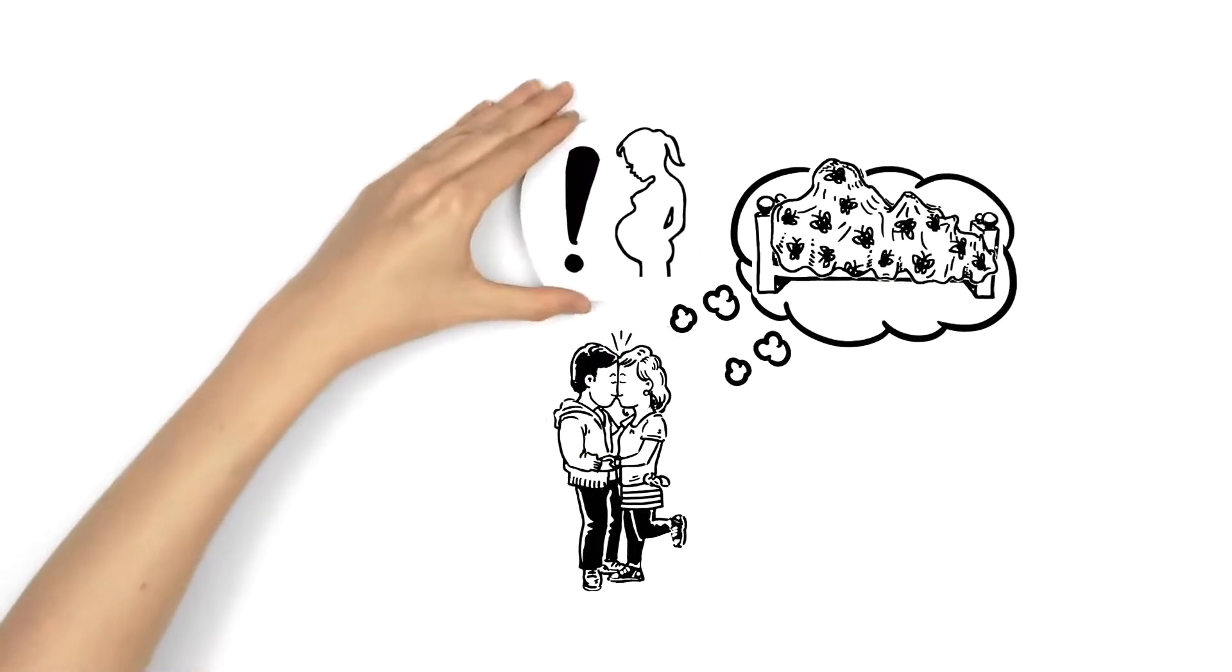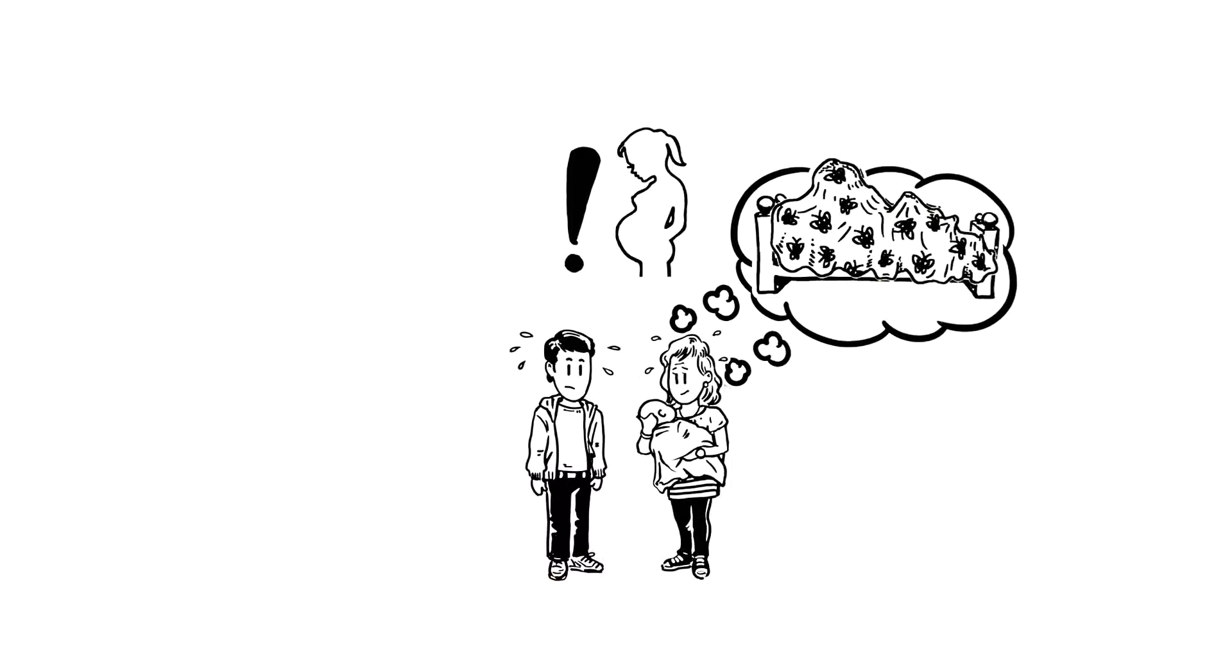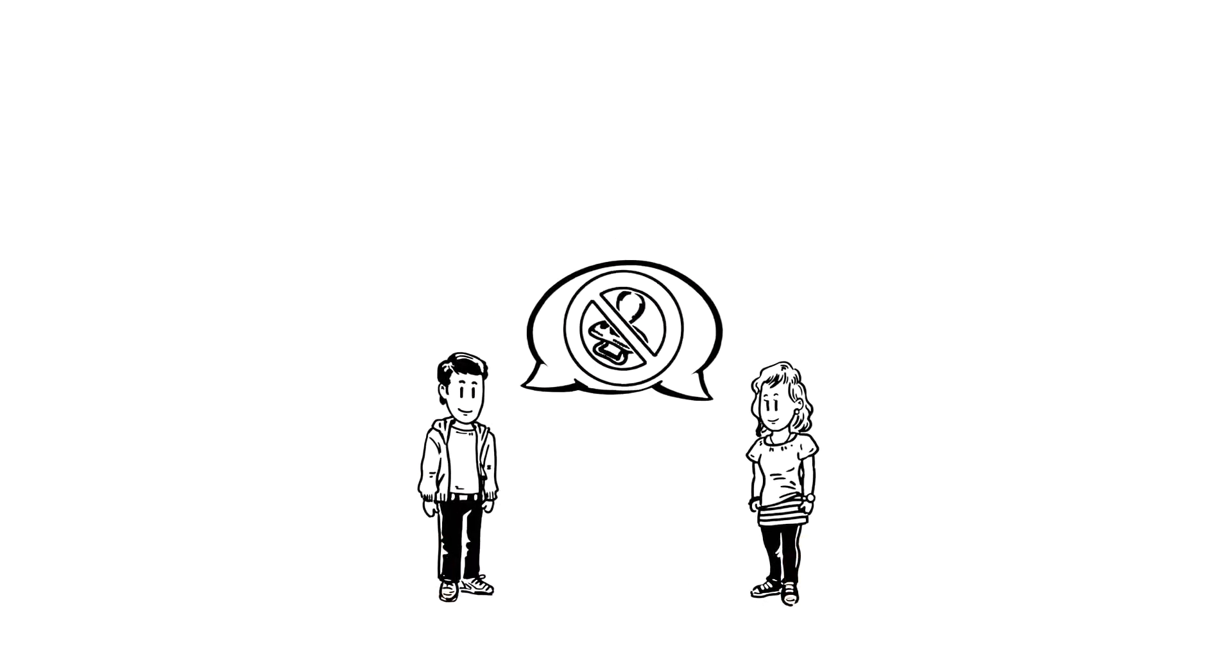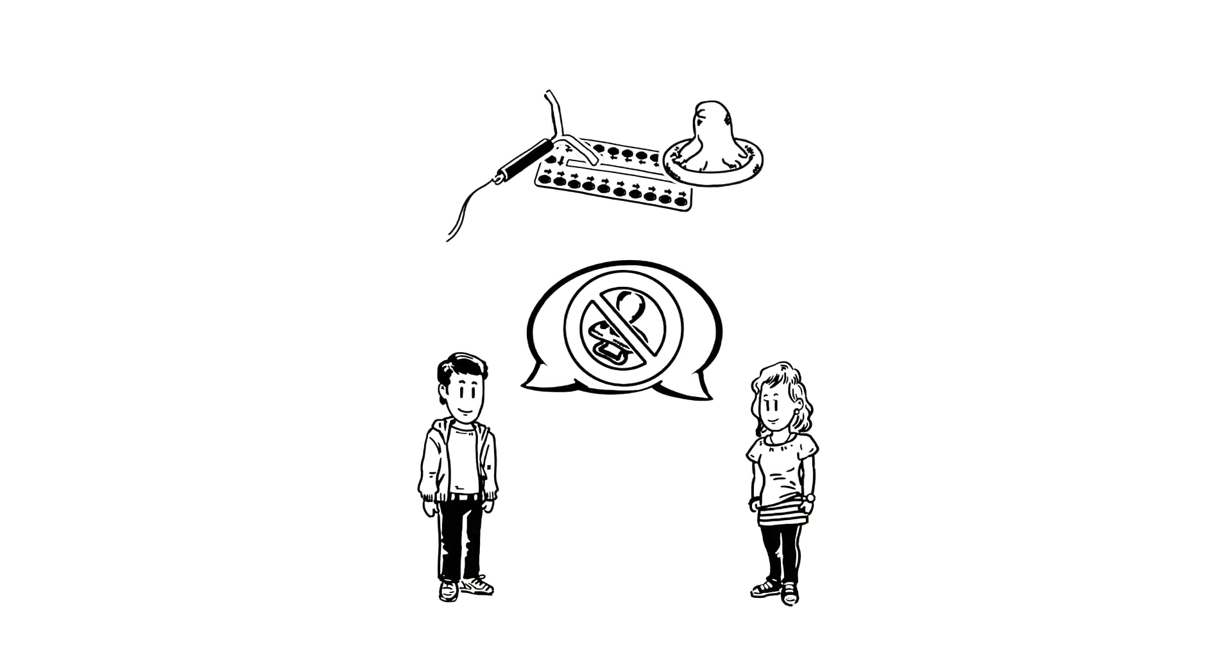Of course they know about the risk of pregnancy, but they consider themselves way too young to have a child. Because of that, talking about contraception before their first time is important. They already know of the contraceptive pill, the coil and condoms, but this information is too basic.